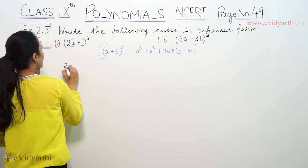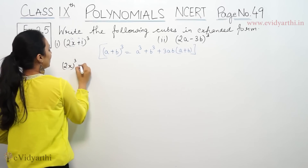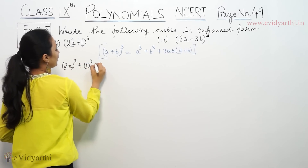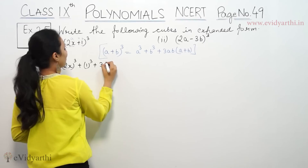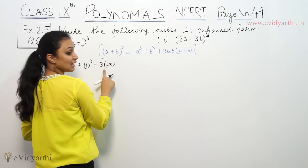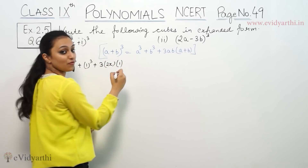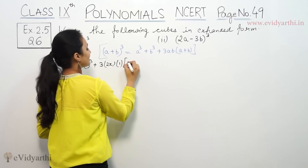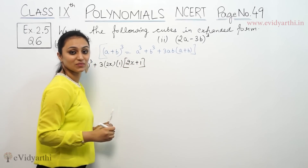So a plus b whole cube, we have the expanded form. Here we have (2x) whole cube plus 1 whole cube plus 3ab, where 3a is 2x and b is 1, in the bracket a plus b, that means (2x plus 1).